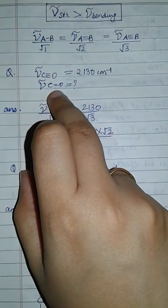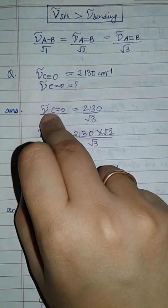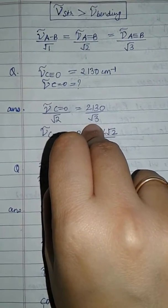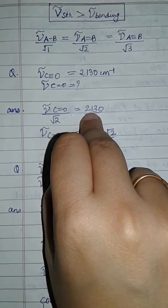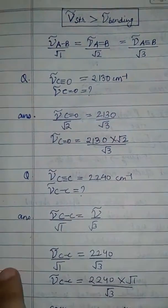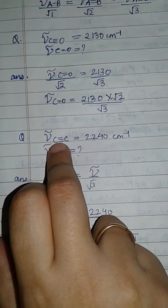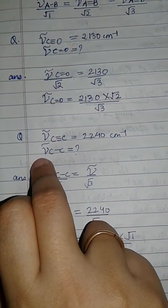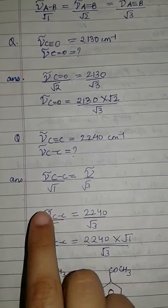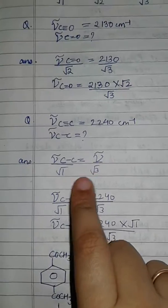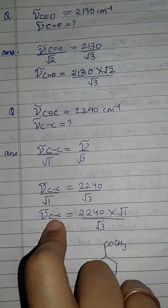The wave number of C triple bond O is 2130 cm⁻¹ and we need to find the wave number of C double bond O. We know that ν_CO divided by root 2 equals ν_CO divided by root 3, so we put the C triple bond O wave number and find the C double bond O wave number by cross multiplying. Similarly, given the C triple bond C wave number is 2240 cm⁻¹, we use the relation: wave number of C single bond C divided by root 1 equals wave number of C triple bond C divided by root 3 to find the C single bond C wave number.